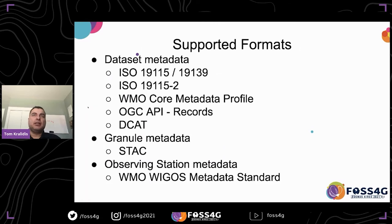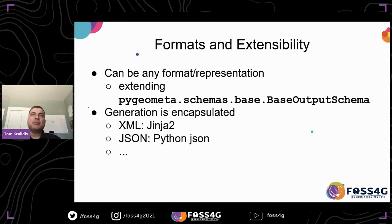Supported output formats include ISO 19115/19139, with recently added support for ISO 19115-2. We also support the WMO Core Metadata Profile, OGC API Records, and DCAT — the DCAT support was contributed by GeoCat, which I appreciate. We also support STAC, and for WMO activities we support the WIS metadata standard. There's been a lot of action extending the project with different standards in the last 18 months. For extensibility, you write your own extension class, encapsulate your output logic inside it, and use the plug-in mechanism to output any metadata format you wish.